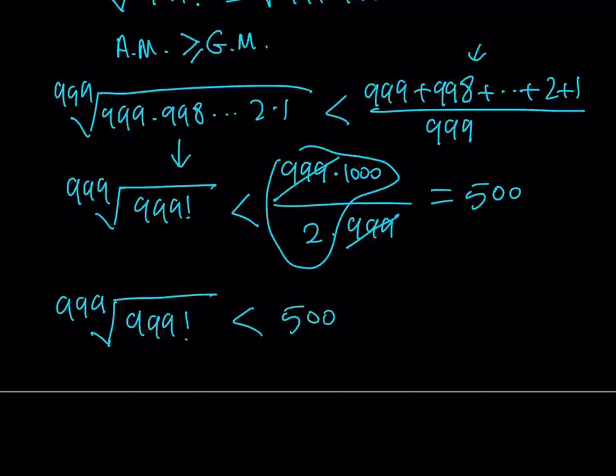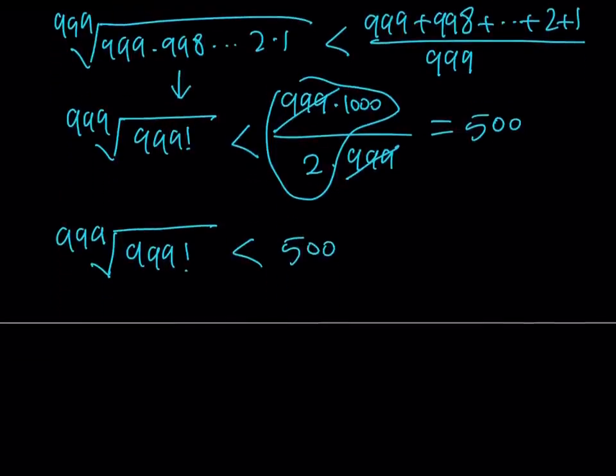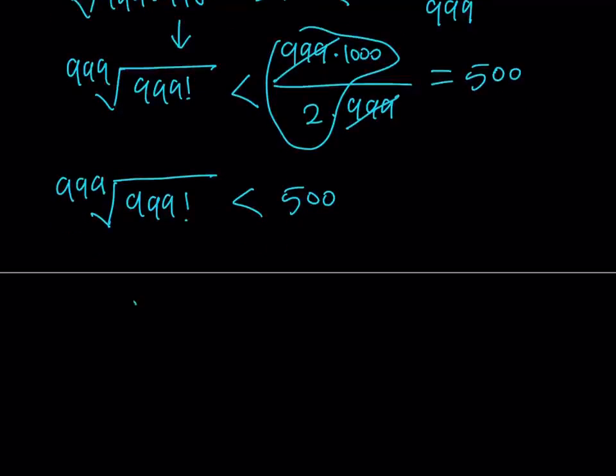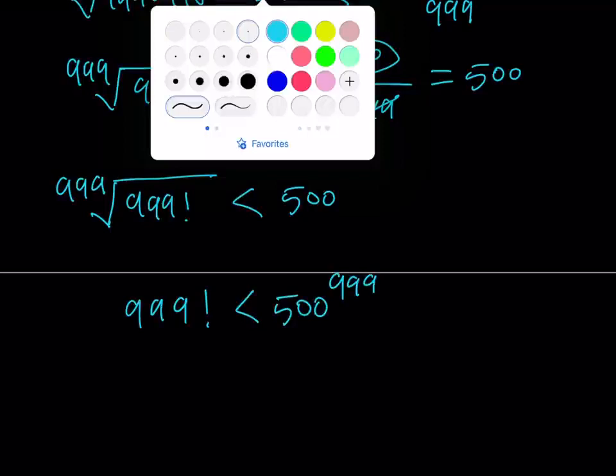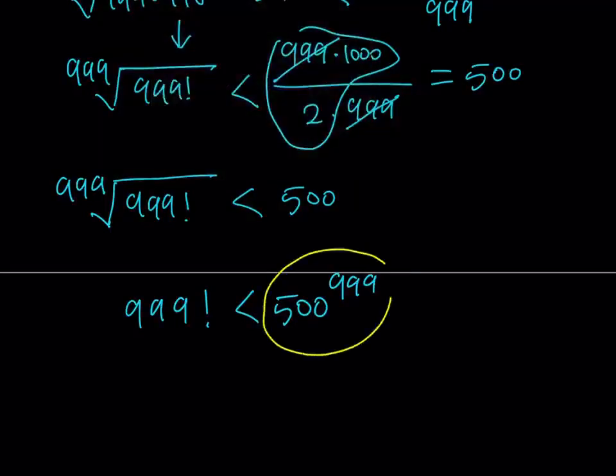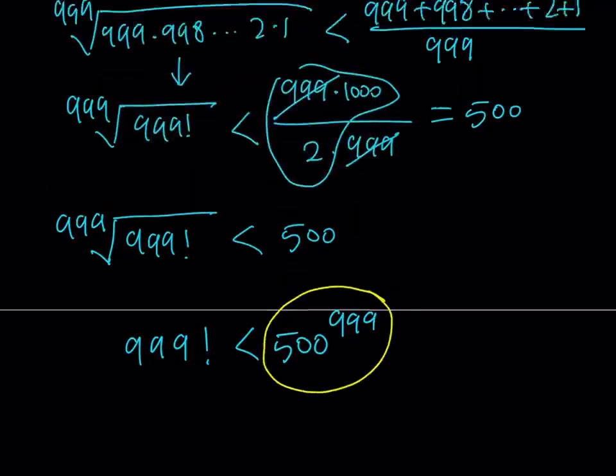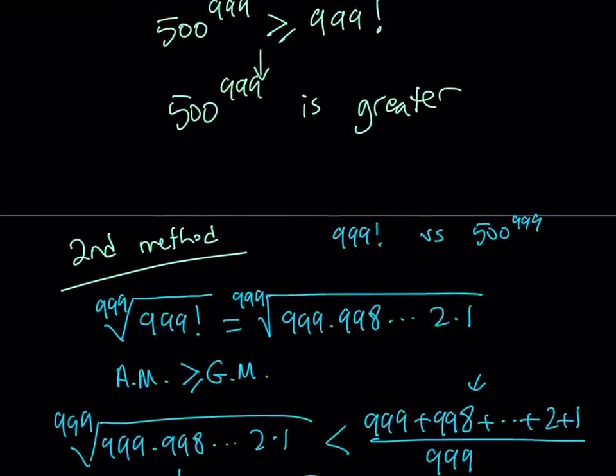This result gives me the 999th root of 999 factorial is less than 500. Since both of these quantities are positive, I can raise both sides to the power 999, and that gives me 999 factorial is less than 500 to the power 999. Therefore, the larger number in this case is 500 to the power 999, as we figured out with the first method.